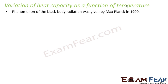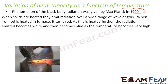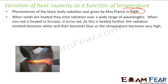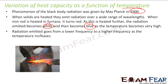So let's talk about the variation of heat capacity as a function of temperature. The black body radiation and all these things were discussed around 1900. If you take this iron rod and heat it, it becomes red. If you heat it further, it emits radiations — first white color radiations, and then blue color radiations. That is what you can observe experimentally. So the radiation emitted goes from lower frequency to higher frequency, because white has lower frequency and blue has higher frequency. And this happens as the temperature goes up.